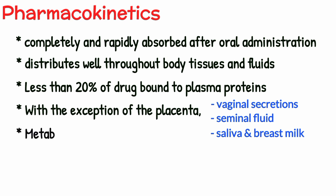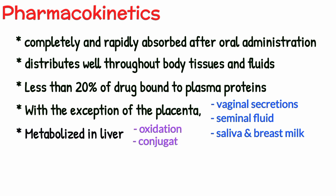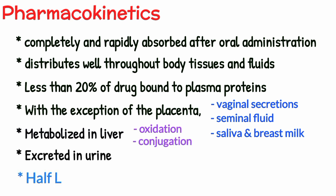It is metabolized in the liver primarily by oxidation and by glucuronide conjugation, and excreted in urine, with a plasma half-life of about 8 hours.